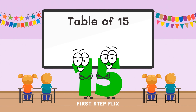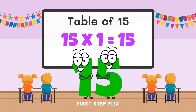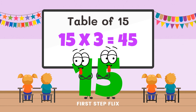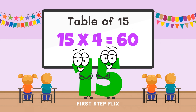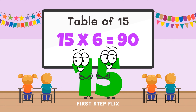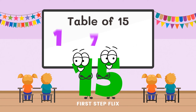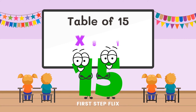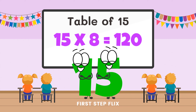Table of 15. 15 ones are 15. 15 twos are 30. 15 threes are 45. 15 fours are 60. 15 fives are 75. 15 sixes are 90. 15 sevens are 105. 15 eights are 120.